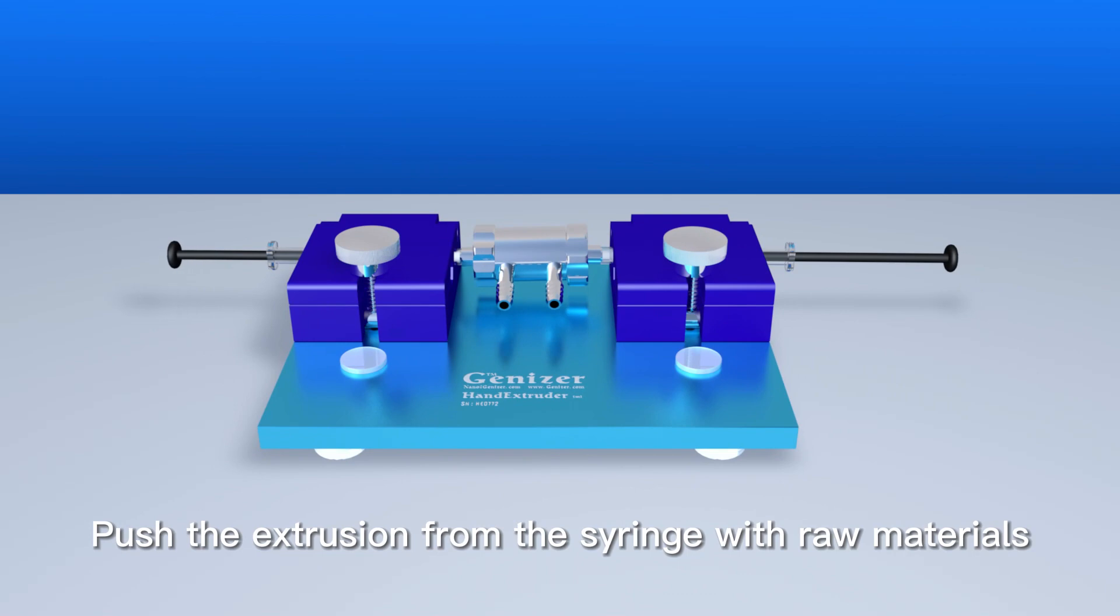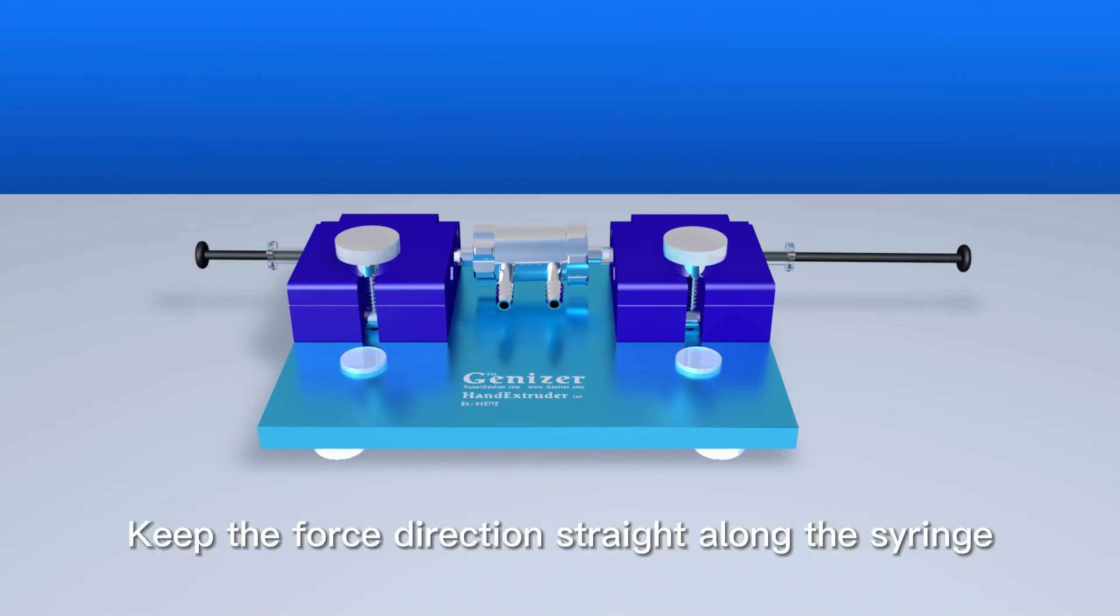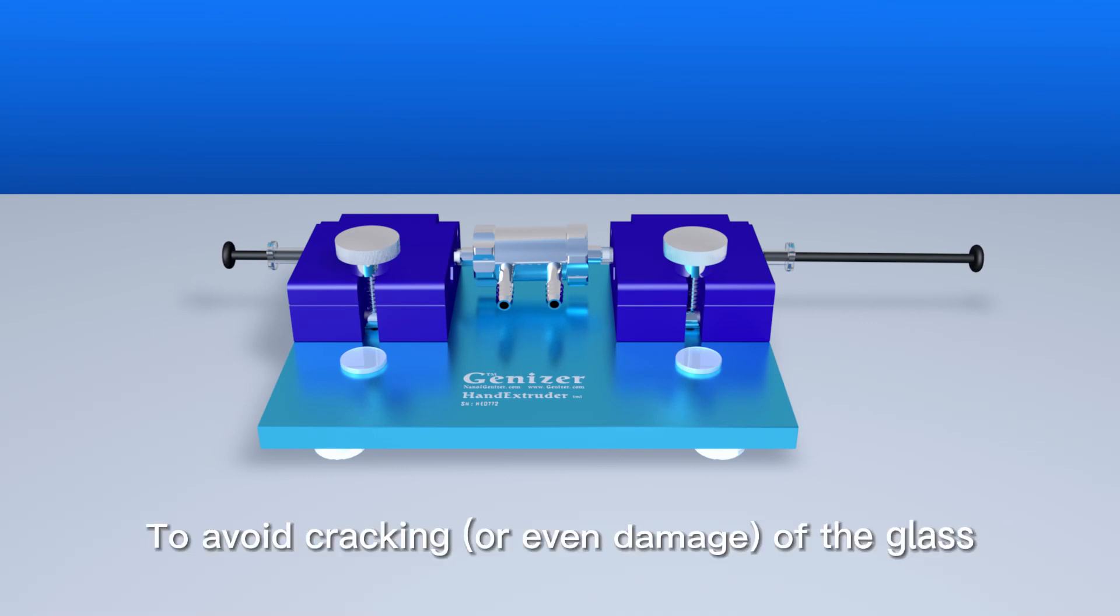Push the extrusion from the syringe with raw materials. Keep the force direction straight along the syringe to avoid cracking or even damage of the glass.